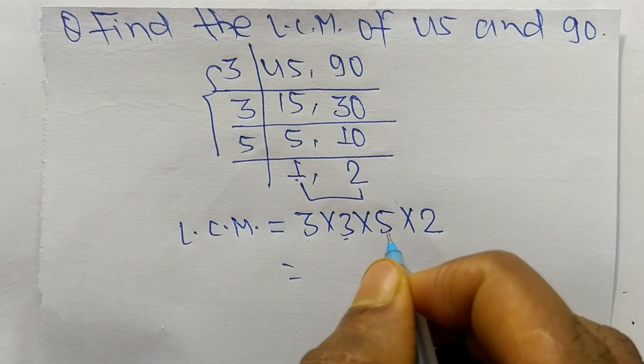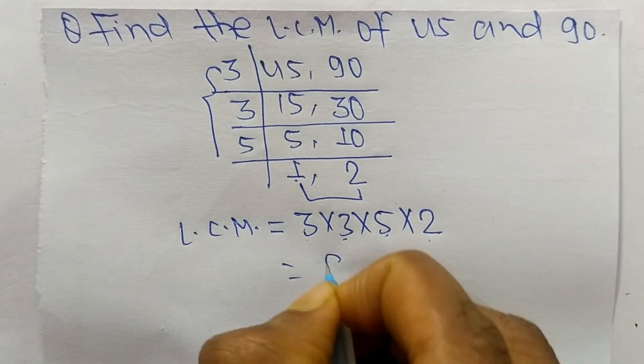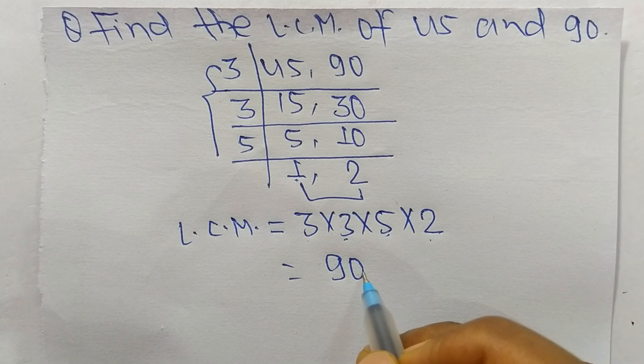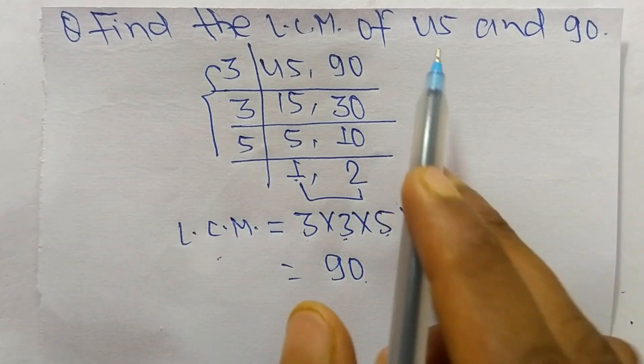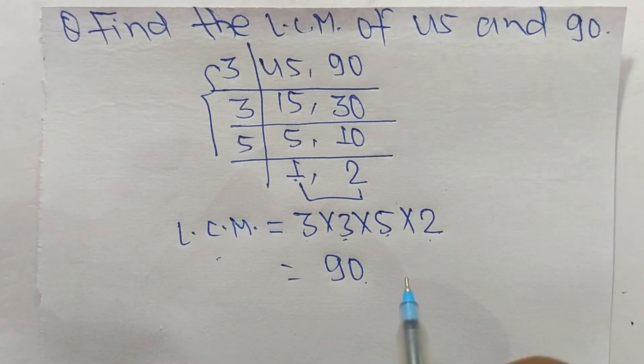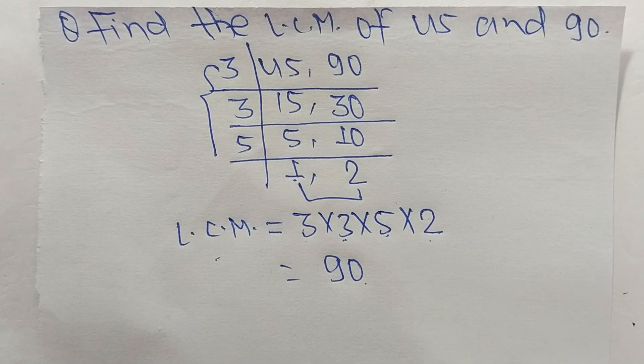45 times 2 equals 90, so 90 is the LCM of 45 and 90. This much for today, and thanks for watching.